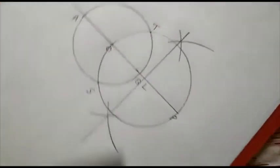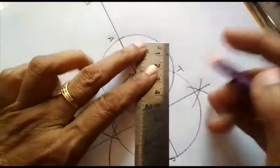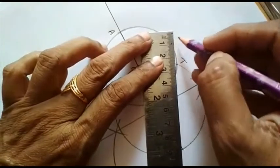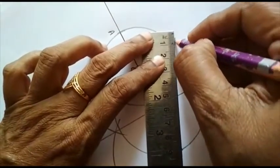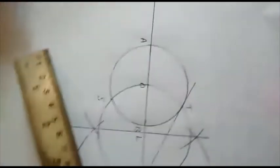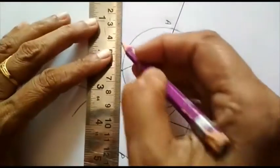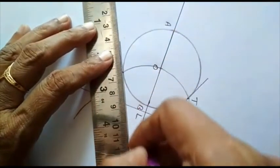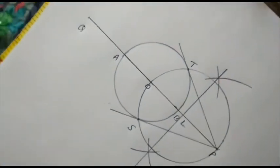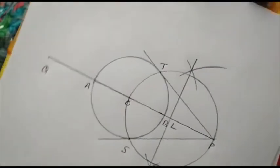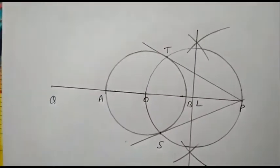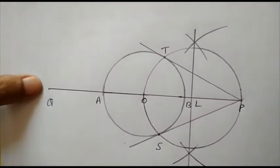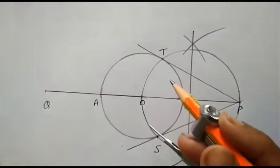Now we will join PT and PS which are the required tangents. So same procedure we will do on the other side. I have to draw tangents from Q. Again, I will draw the perpendicular bisector of OQ.